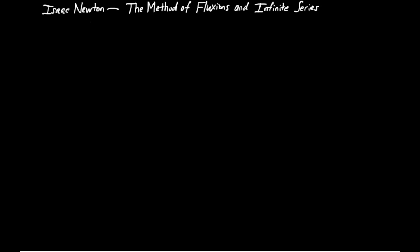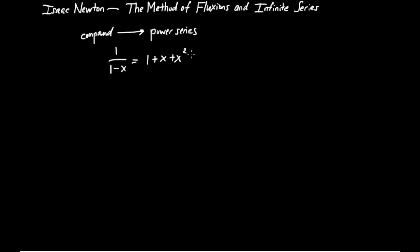This is the second video on Isaac Newton's The Method of Fluxions and Infinite Series. In the previous video, we talked about how certain quantities, which Newton calls compound quantities, can be converted or thought of as power series. We provided examples where quantities such as 1 over 1 minus x can be converted to the power series 1 plus x plus x squared plus x cubed, and so on. We also used power series to extract roots from equations, such as estimating the square root of a squared plus x squared.